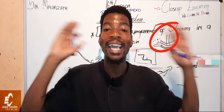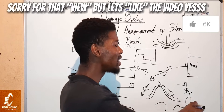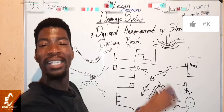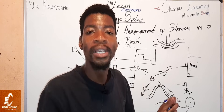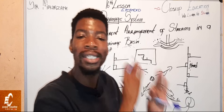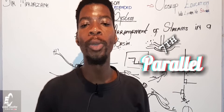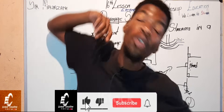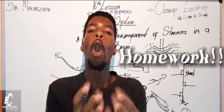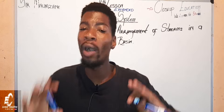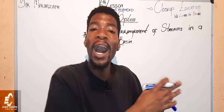Our sixth pattern is the deranged pattern. It is a crazy pattern — no one understands where the source or mouth is, there are no clear streams joining a main river. Lastly, there is the parallel pattern, which you must draw as your homework. Make sure you like this video and subscribe to my channel.